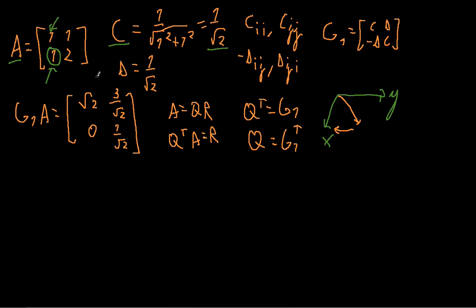And our sine will be given by the element we want to eliminate — so 1 — over the square root of this element squared plus the top element of this vector squared, giving 1 over the square root of 2.